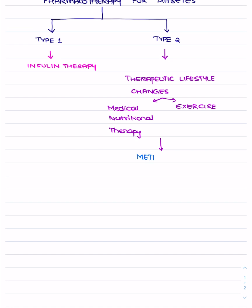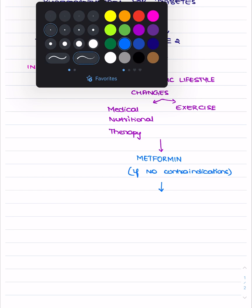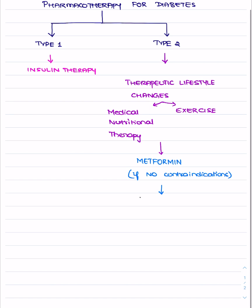If blood sugar is not controlled through lifestyle changes, you can add metformin to bring blood sugar under control. Metformin has to be administered making sure there are no contraindications. You need to go for a renal function test — if the GFR is very low, you need to avoid using metformin. Metformin is the initial drug of choice in the treatment of type 2 diabetes mellitus.